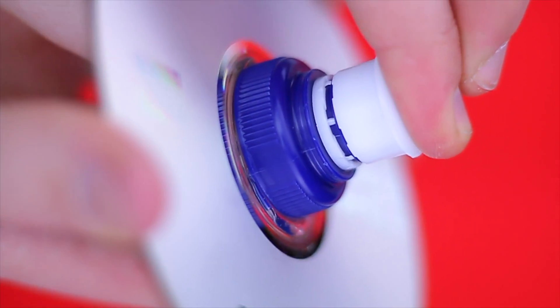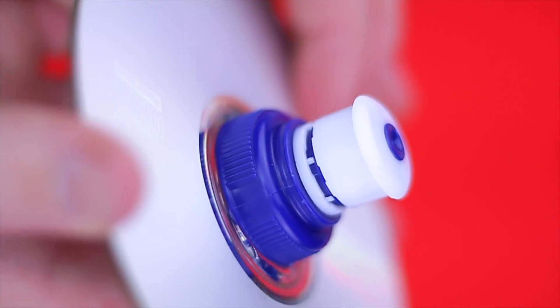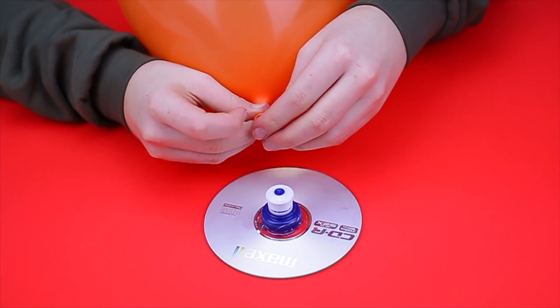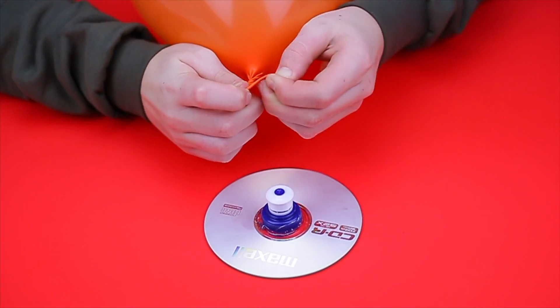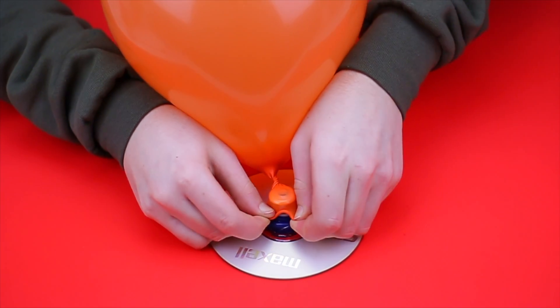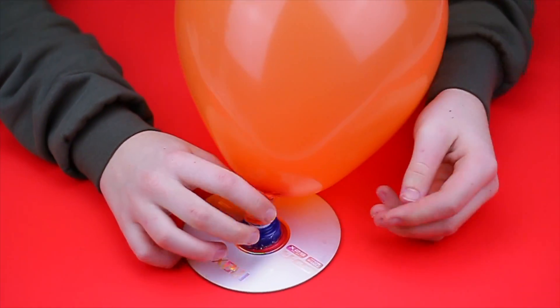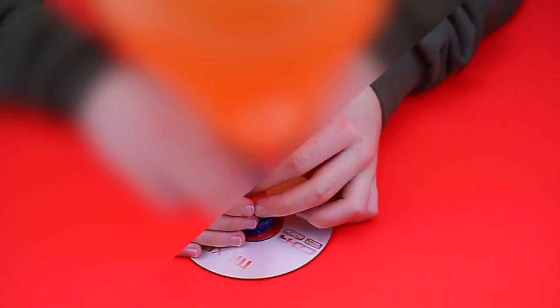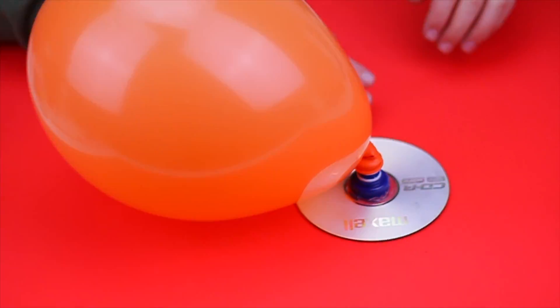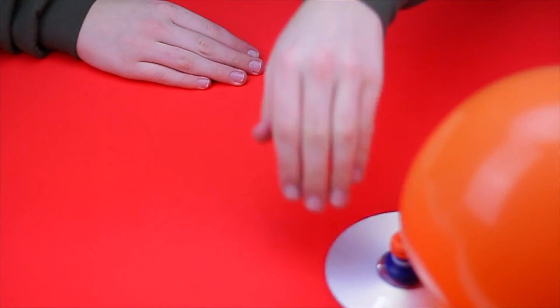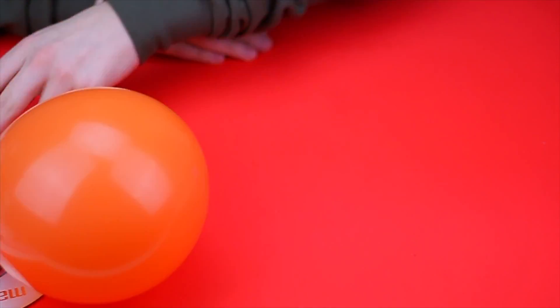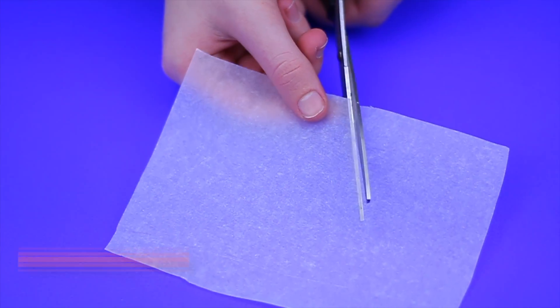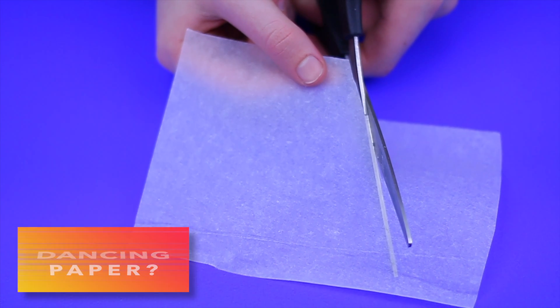Before the next step you need to make sure the cap is closed. Blow up a balloon and place it over the closed cap. When you're ready, open the cap lid and play with your hovercraft. Take some tissue paper and cut out a random shape.